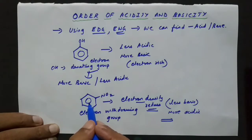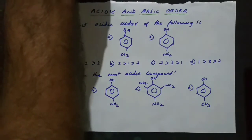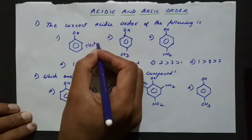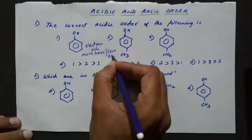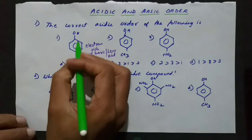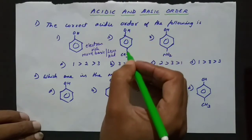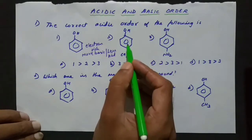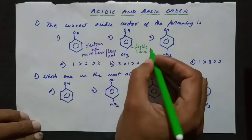The force of attraction between H and the benzene ring will reduce because the electron density decreases. Now let us see some examples. The first example asks for the correct acidic order. For a compound with OH (electron-donating), the benzene ring becomes electron-rich — more basic and less acidic. In the second case, benzene receives electrons from both OH and a methyl group, so the electron density will be very high, making it highly basic and least acidic.